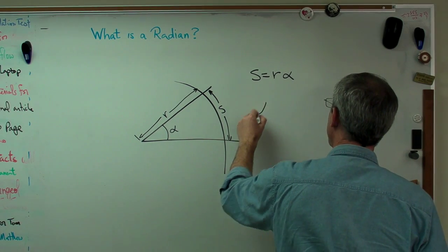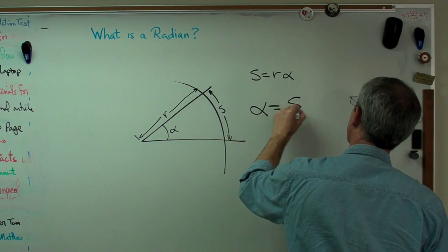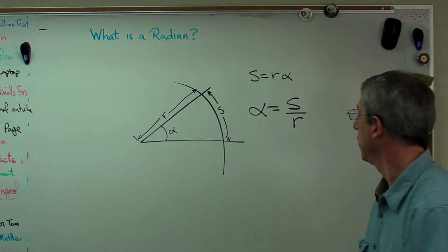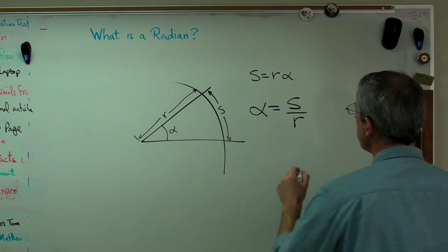Let's write out alpha another way. There you go: the expression for alpha is s over r.